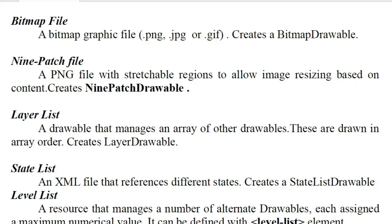The first drawable resource element is a layer list. It is a drawable that manages an array of other drawables. That is a layer list. If you want to include an image, you can overlap the first image. You can include the first layer — that is a layer list. You can overlap layers and add items to the layer list.